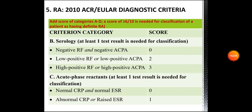For category B, serology — at least one test result is needed for classification. Negative rheumatoid factor and negative ACPA gives a score of 0. Low positive rheumatoid factor or low positive ACPA gives a score of 2. High positive rheumatoid factor or high positive ACPA gives a score of 3.